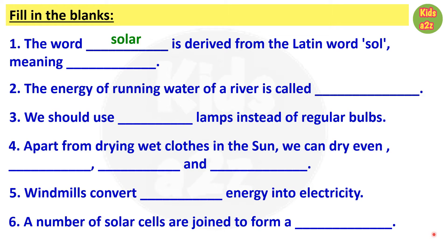Here kids need to fill in the blanks with the appropriate words. First one: The word 'solar' is derived from the Latin word 'sol' meaning sun. Question 2: The energy of running water of a river is called hydro energy.